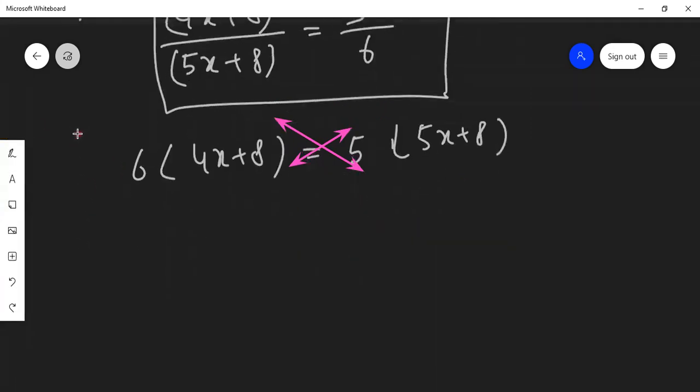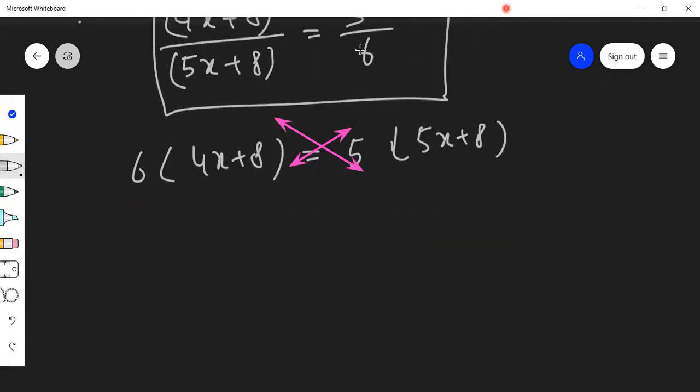Let us open the brackets. 6 times 4 is 24x plus 6 times 8 is 48, is equal to 5 times 5 is 25x plus 5 times 8 is 40.